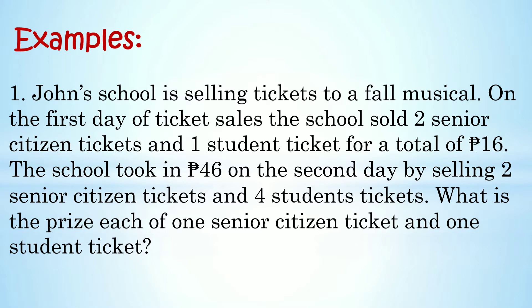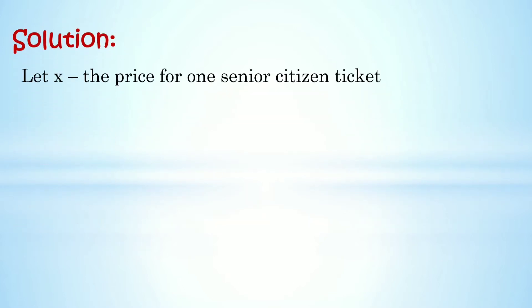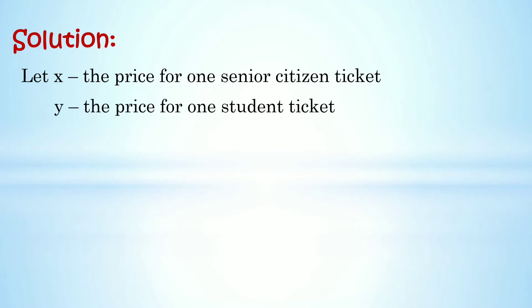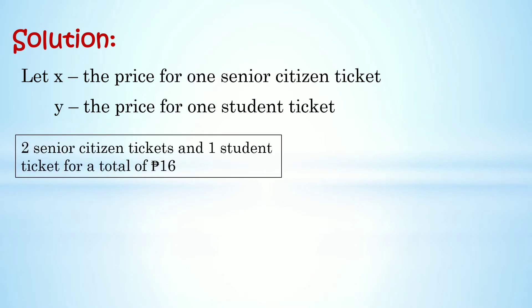So sa number one, ano ba yung hinahanap natin? Hinahanap natin kung magkano ang presyo ng isang senior citizen ticket at isang student ticket. So this time gagamit po tayo ng system of linear equations in two variables. So let x be the price for one senior citizen ticket and y be the price for one student ticket.